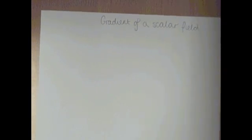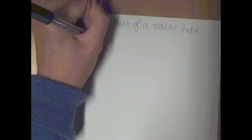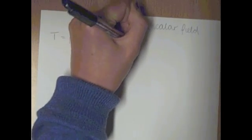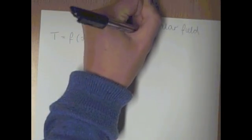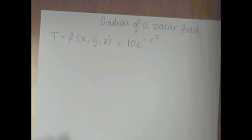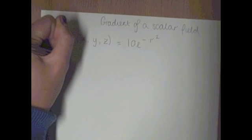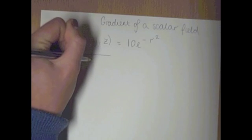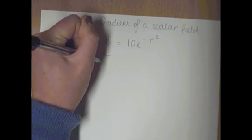So if we're looking at the temperature in a three-dimensional room, we'll say the temperature T equals F of X, Y, and Z, which in this example equals 10e to the minus R squared. And so in this, our R equals the square root of x squared plus y squared plus z squared.